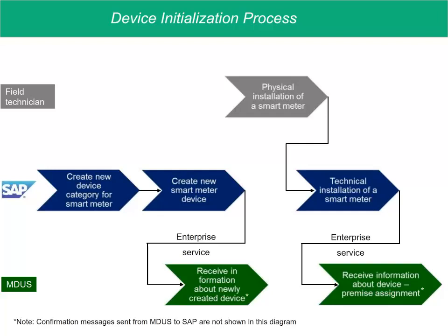A utility's measurement task indicates what type of measurements should be taken using this device — for example, measuring consumption, energy, volume, or power periodically as indicated. It associates the physical meter with this measurement task, which can also be thought of as a logical representation of the meter's function. Technical installation also includes configuring the meter in SAP for utilities, specifying how many registers there are — for example, for measuring energy used during different time blocks such as daytime and nighttime usage. Performing this task in SAP for utilities invokes a request to the MDUS, and the MDUS then sends back a confirmation.